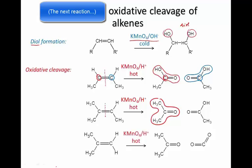Here's another variation: 2-methylprop-1-ene. The double bond is broken, and again the left-hand fragment becomes a ketone because it's on a middle carbon. But the right-hand fragment is only a single carbon, just one all by itself. This at first forms methanoic acid, as you might expect, but in the presence of such a strong oxidizing agent as potassium permanganate, methanoic acid is able to oxidize further to give carbon dioxide gas. So when oxidative cleavage is performed on a double bond at the end of a molecule and a single carbon is cleaved off, that single carbon ends up being released as carbon dioxide gas.